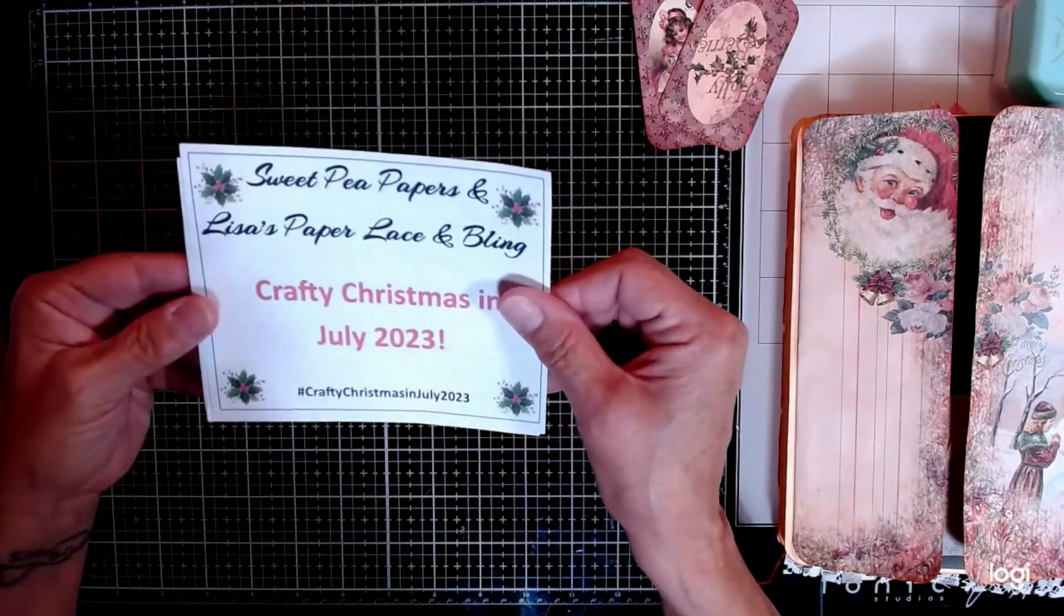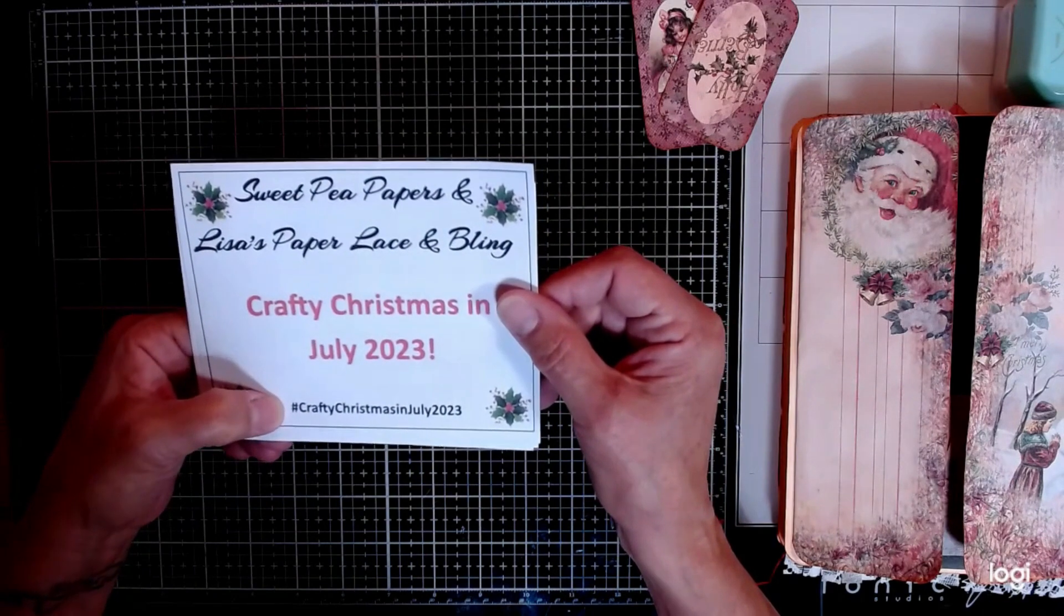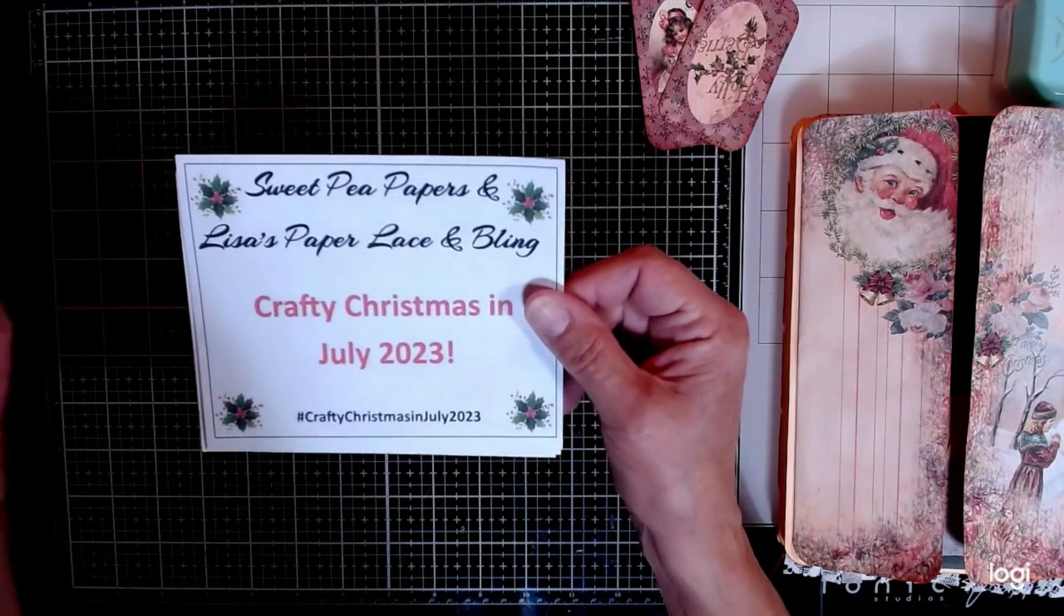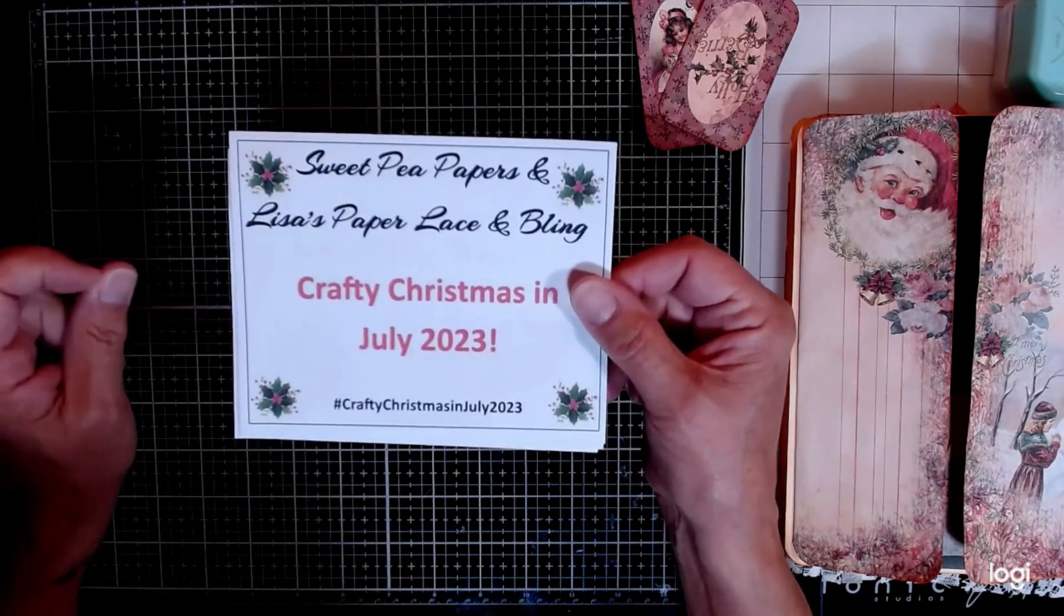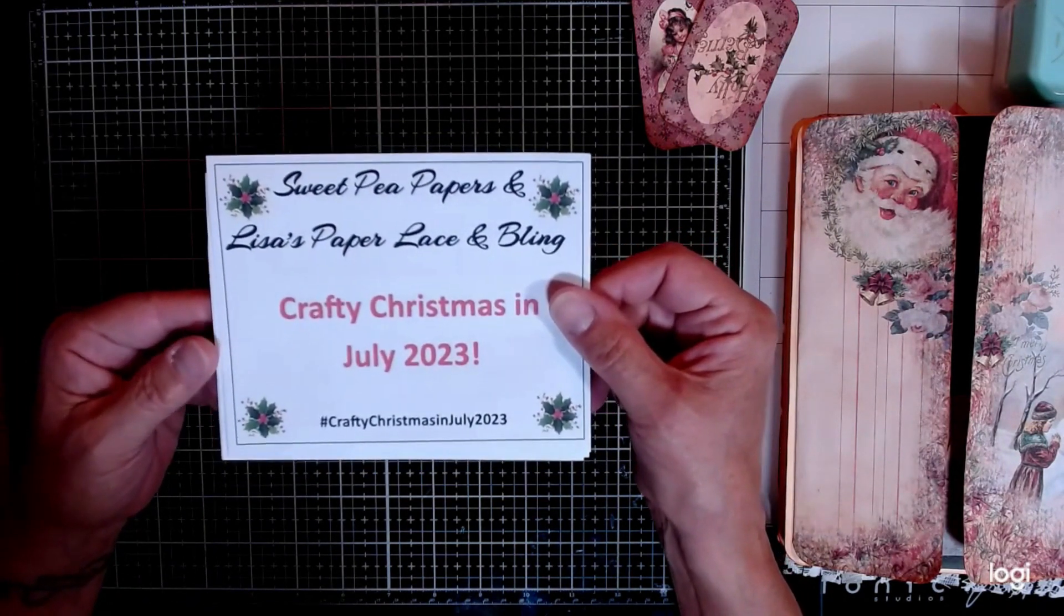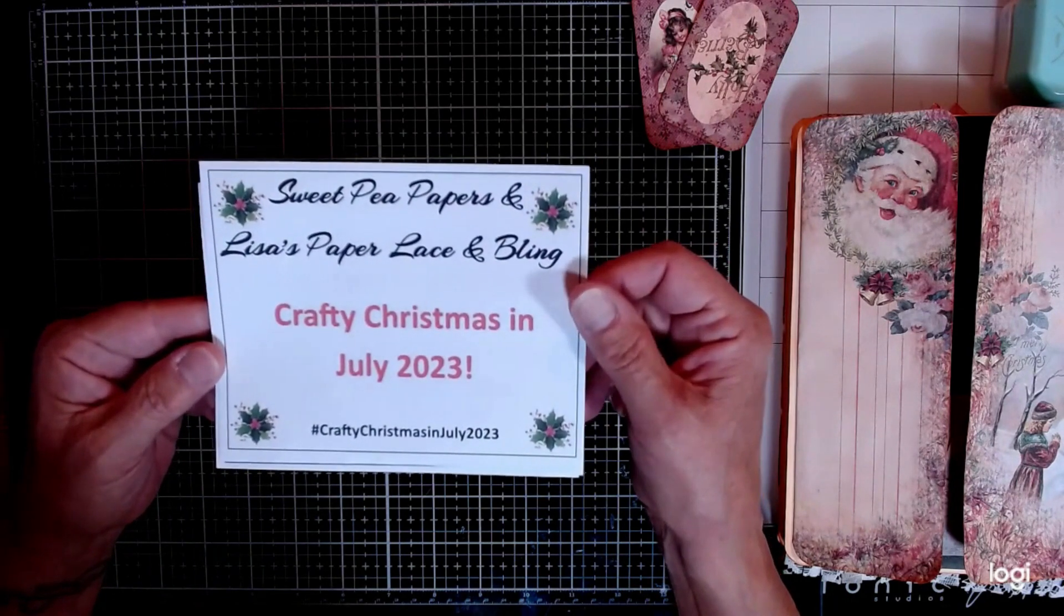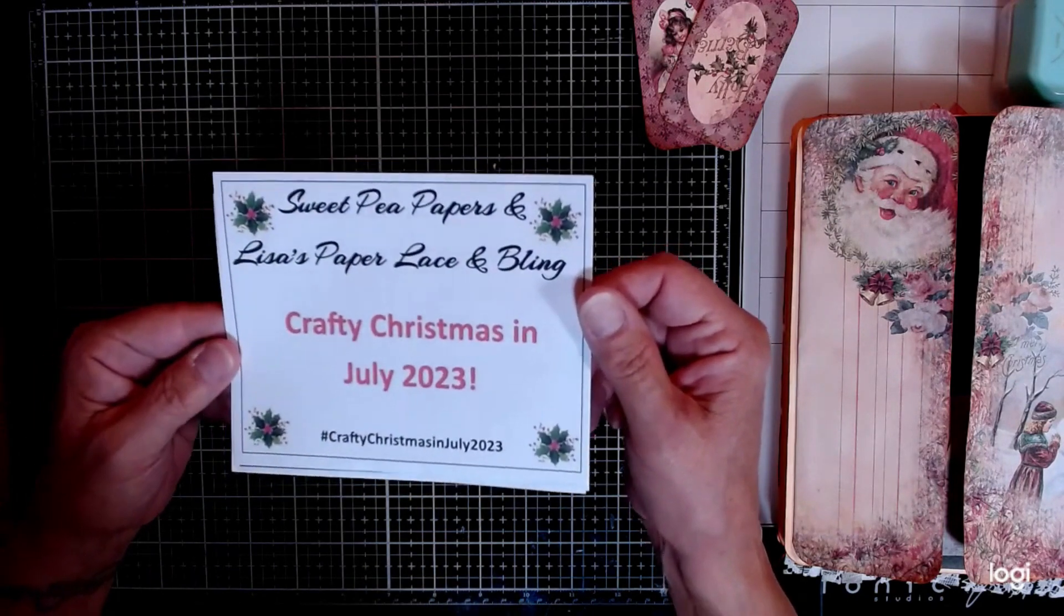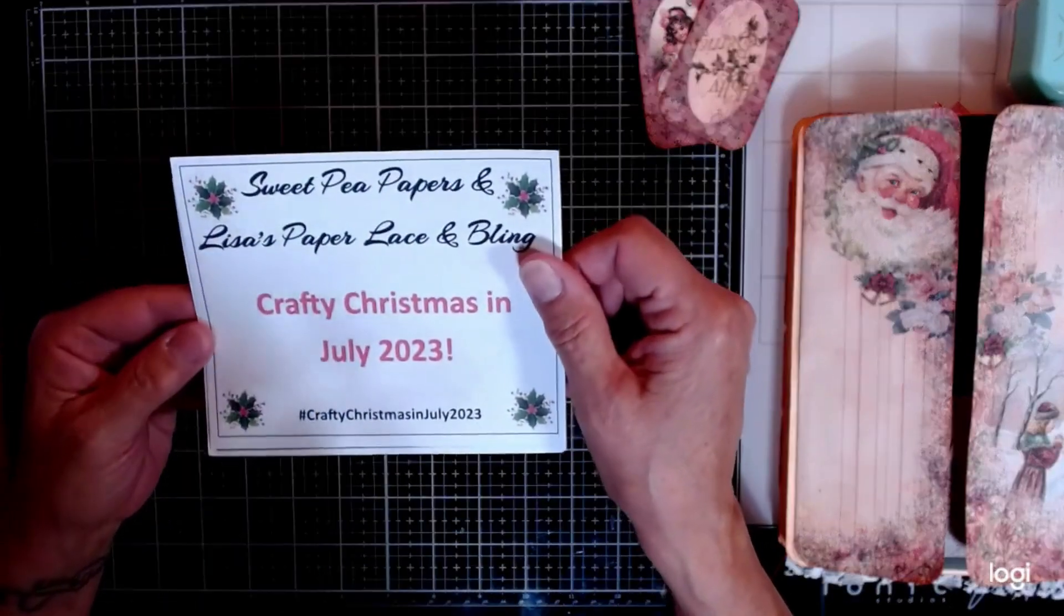This is the third year doing this. If you go to hashtag Crafty Christmas in July 2023, you'll see the whole playlist of everyone's creations. Terry of Sweet Pea Papers has a drawing this month and Lisa from Lisa's Paper Lace and Bling has given away a free yard of lace to everyone that follows her shop and buys over $15 worth of product before tax and shipping. She also has free shipping on orders over $35.